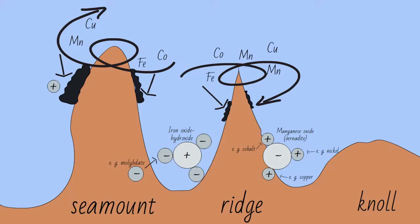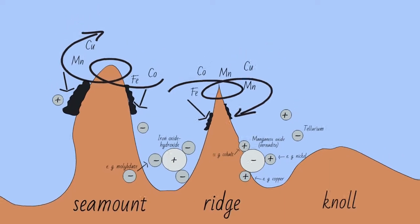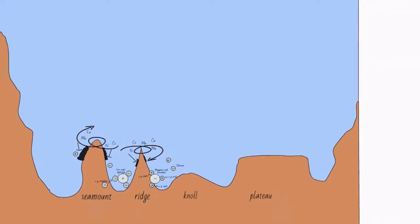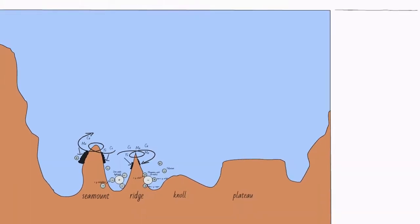This is how the crusts contain so many different minerals and rare elements like tellurium, which is used for solar panels, as well as platinum and titanium. The formed crusts are very porous, with a high surface area in the crust, which provides a large area for minerals to deposit on.